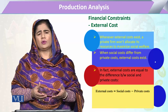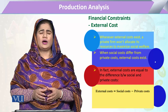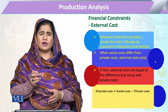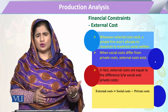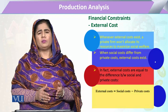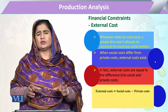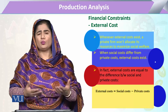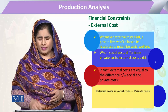When private costs are there, and when we add the external costs to the private costs, they both sum up to become the social costs. Conversely, social costs minus private costs gives us the external costs — those additional costs borne by society or other groups of people.